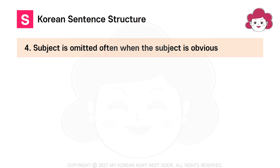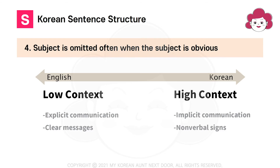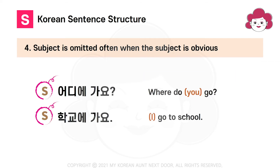Number 4: Subject is often omitted when the subject is obvious. In comparison to English, Korean is a high-context language and it relies more on context and shared assumptions or non-verbal signs. For example, instead of saying 'I go to school,' you just say 'go to school,' and it will be understood. When the subject is clearly understood or the context is obvious enough, the subject is dropped.